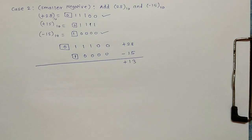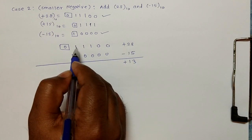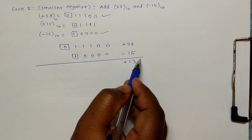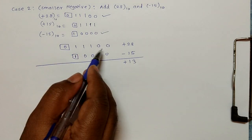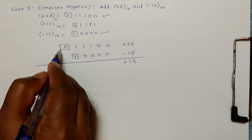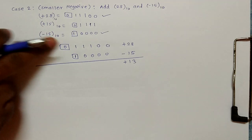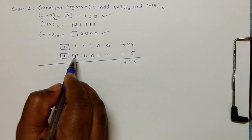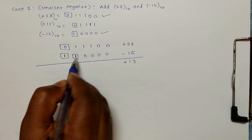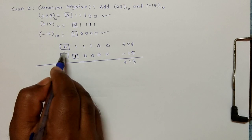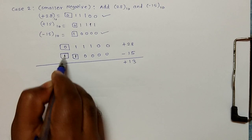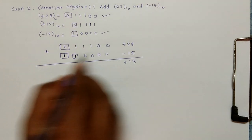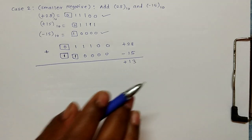We know the addition of these two will give us plus thirteen. Twenty-eight uses five magnitude bits plus one sign bit. Our result, plus thirteen, will fit in five or fewer bits, so there is no need to extend the sign bit of twenty-eight. We only need to extend the sign bit of the second number — minus fifteen. Remember, if the number is negative and you are extending the sign bit, that bit is extended with value one.